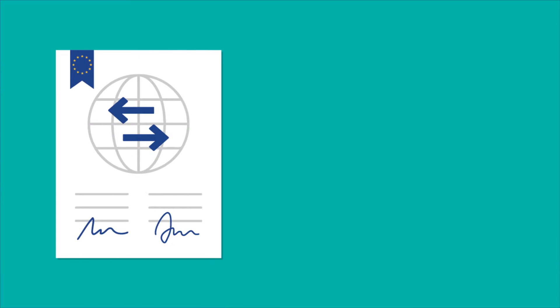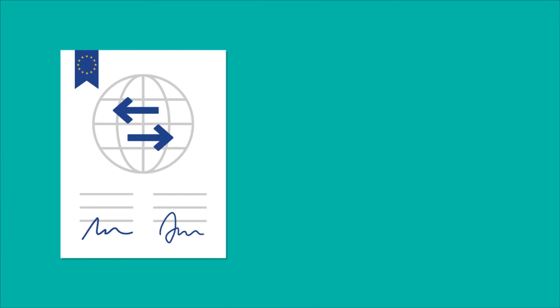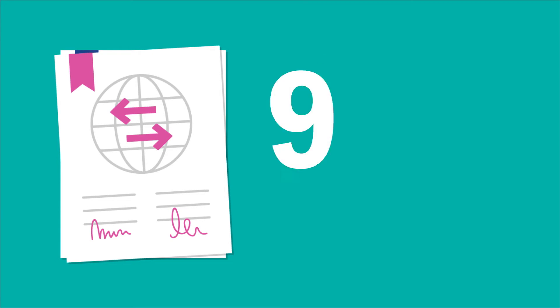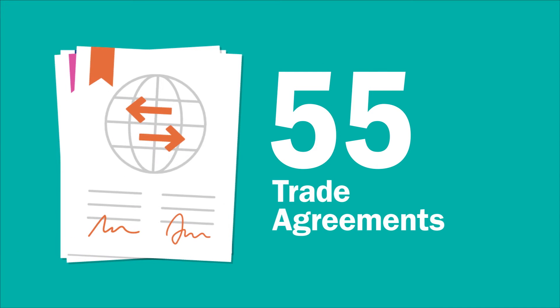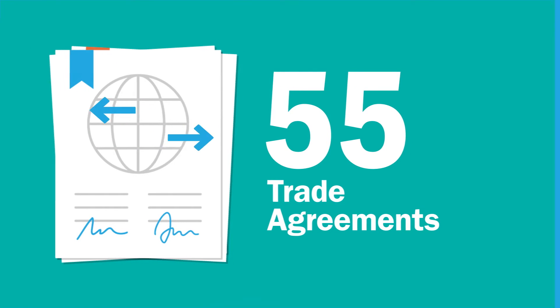On March 29, 2017, Article 50 was triggered, and the UK set off on the path of leaving the EU. As well as sorting out a deal with the EU, the UK will need to negotiate over 50 trade agreements with other countries to keep market access at the status quo.